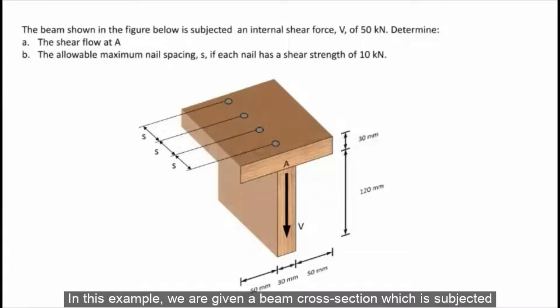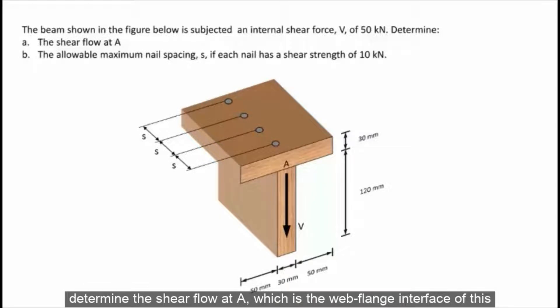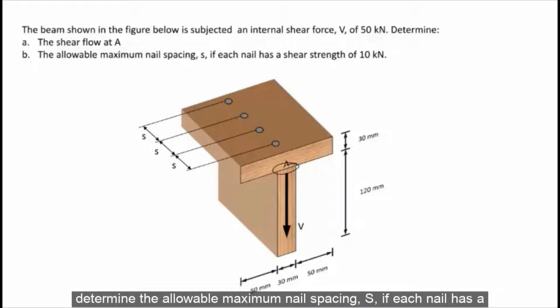In this example, we are given a beam cross-section which is subjected to an internal shear force V of 50 kilonewtons, and we are asked to determine the shear flow at A, which is the web-flange interface of this beam cross-section. We are also asked to determine the allowable maximum nail spacing S if each nail has a shear strength of 10 kilonewtons.